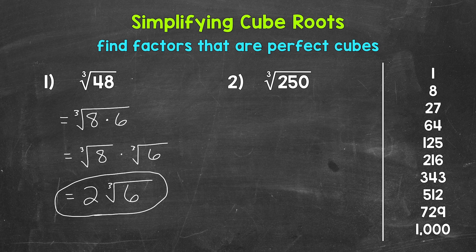Let's move on to number 2, where we have the cube root of 250. 250 is not a perfect cube, but we can simplify. We need to look for factors of 250 that are perfect cubes. Well, 125 times 2 equals 250, and 125 is a perfect cube.